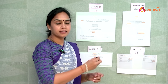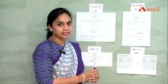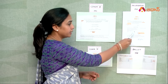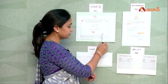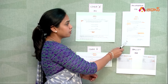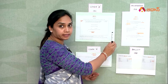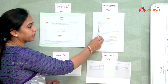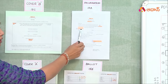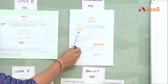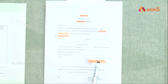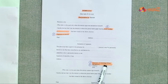We are going to take the Facilitation Center. We have two forms and two covers. First, the declaration form. The declaration form has a serial number. We are going to give the voter ID, voter information, and the attesting officers' signature and designation.